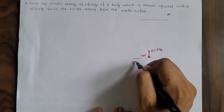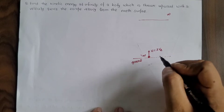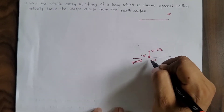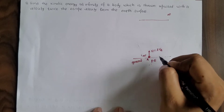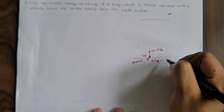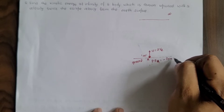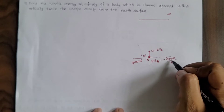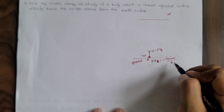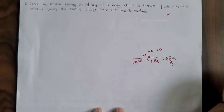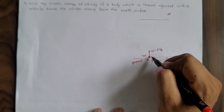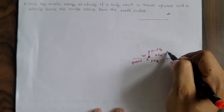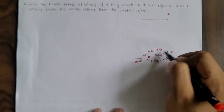At ground level, that is at the Earth's surface, the potential energy of the object is: PE = -GMm/r, where M is the mass of the Earth, m is the mass of the object, and r is the radius of the Earth. The kinetic energy at point A is: KE_A = ½mu², since the object is thrown with velocity u.